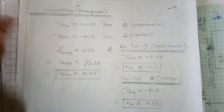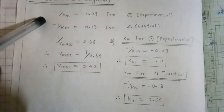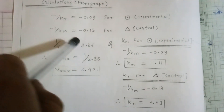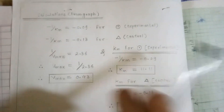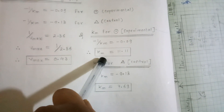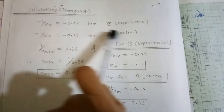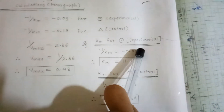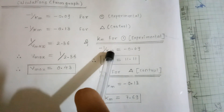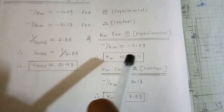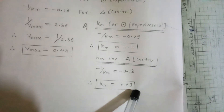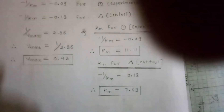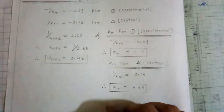Here I am showing the calculation from the graph. The value of minus 1/Km obtained from the experimental series is 0.09, and from the control series it is 0.13. Taking the reciprocal to get Km: for the experimental series (with inhibitor), Km is 11.11, and for the control series (without inhibitor), Km is 7.69. So you can see that Km has increased with the inhibitor series. Km increases means the enzyme-substrate affinity is reduced.